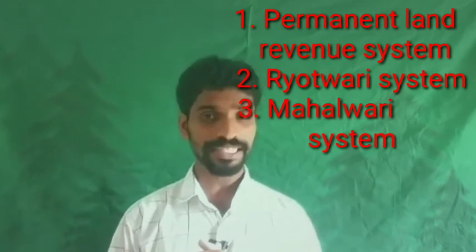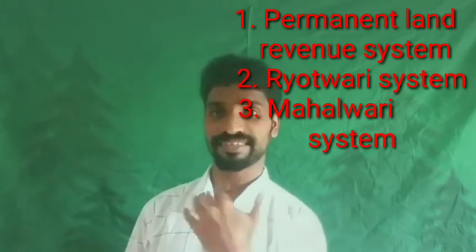How did the land revenue policy implemented by the British affect the agricultural sector? When farmers were unable to pay tax in the form of money before the deadline, they had to take loans from moneylenders at a high rate of interest. The loan was obtained by mortgaging agricultural land, and those who could not repay had their land seized by moneylenders.